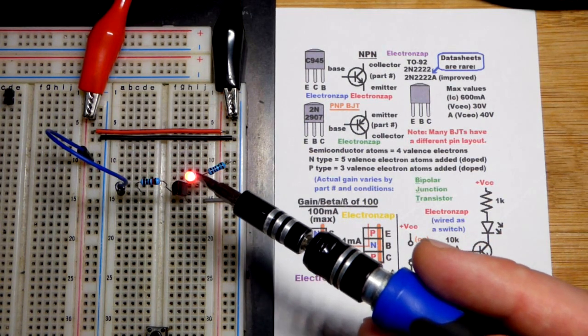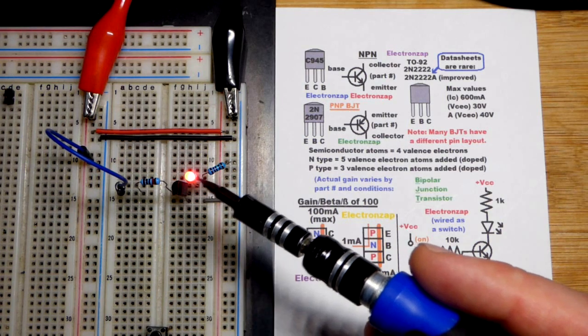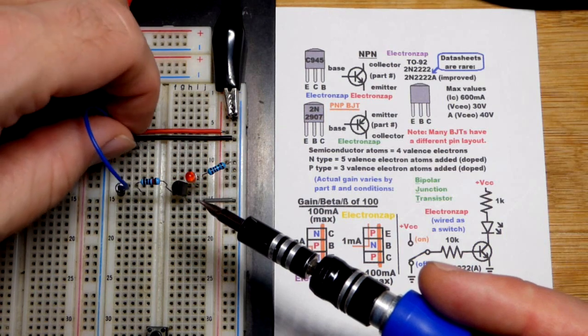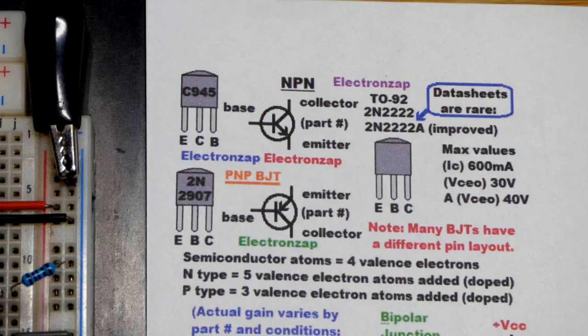But that's enough to get the collector to emitter to conduct better than what the LED load needs. So now you can see the LED is on. If you turn the transistor on more than what the load needs, the load will be on completely. And if you cut off the transistor, turn it off, then the load will be off.